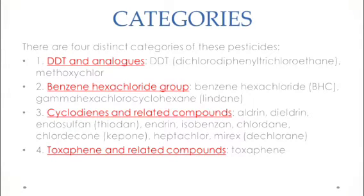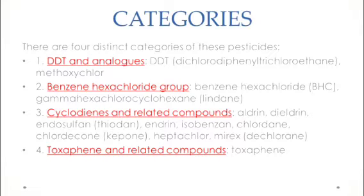The first category is DDT and analogues. DDT is the most commonly known organochlorine pesticide. Its scientific name is dichlorodiphenyltrichloroethane. Another pesticide in this category is methoxychlor.